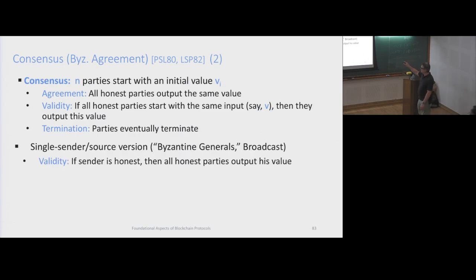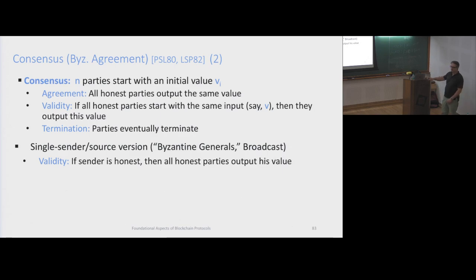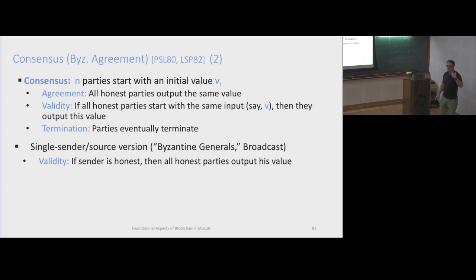The single sender version was originally called Byzantine generals. Let's make the distinction between generals - meaning the single source version - and agreement, the consensus version. The single sender version is what we call broadcast. And the validity condition here is replaced by: if the sender is honest, then all honest parties have to output the sender's value. The agreement is the same.